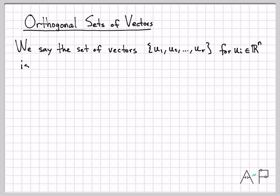We say that a set of vectors, if I have some kind of collection of vectors u1, u2, all the way up to ur, and each one of those is some element in R^n, we say that this whole set is an orthogonal set, so this is a new term.